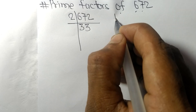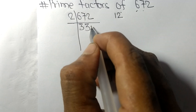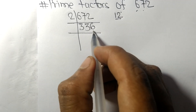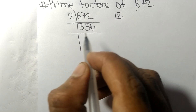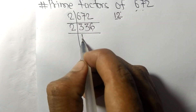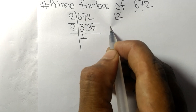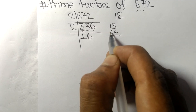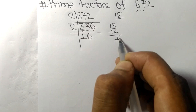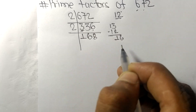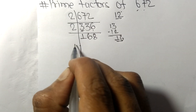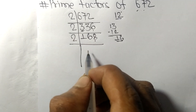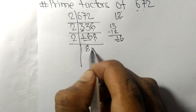Again we have an even number six at last, so it is divisible by two. Continuing to divide by two: two times six means twelve, two times eight means sixteen. Again we have an even number eight at last, so it is divisible by two.